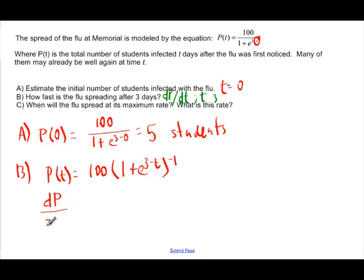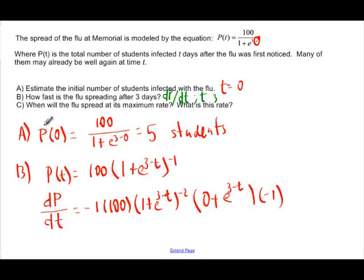And so when I do this, I'm going to have dP/dt. And that's going to be negative one times a hundred, times (1 plus e to the 3 minus t power) to the negative two, and then times the derivative on the inside. So when I take the derivative on the inside, that's going to be zero plus e to the 3 minus t times, and then take the derivative of the 3 minus t part, which is negative one. So that's a big derivative.